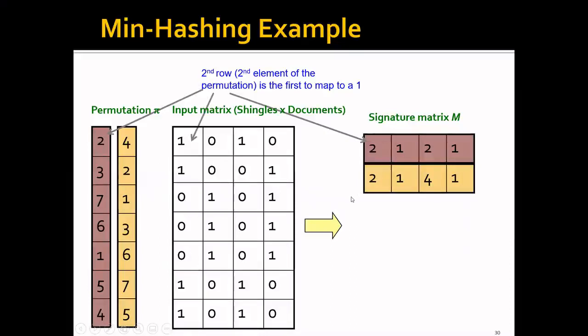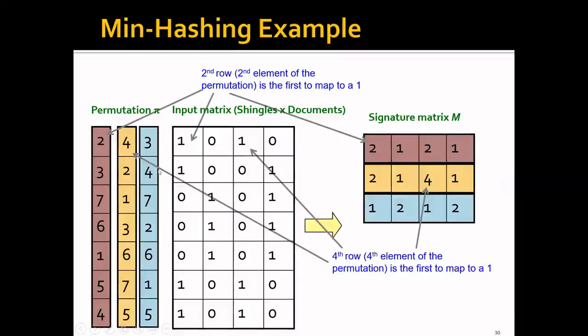And similarly, if we have another permutation, which corresponds to a second hash function, we will again check the rows one by one. And this time, let's switch to a different document. Let's focus on document three. And we will check the rows one by one. We will first check row one. And we got a zero. Then we'll go ahead to check row two. It's also zero. And then we'll go ahead to check row three, zero. And we'll go ahead to check row four. And it is finally a one. So basically, the fourth row is the first to map to one. Therefore, the corresponding signature for the third document will be four.